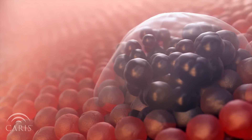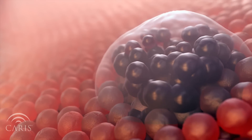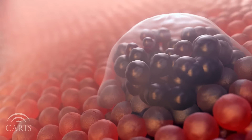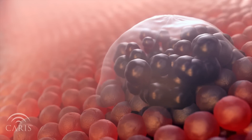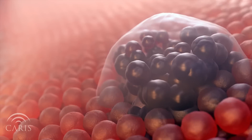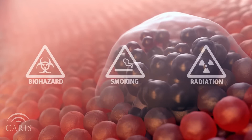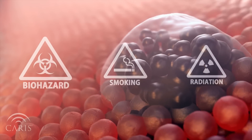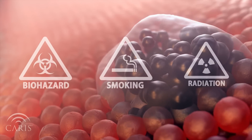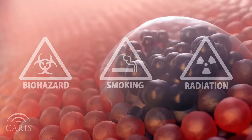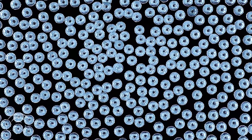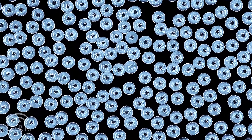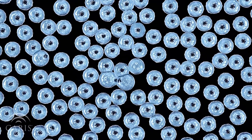Mutations are the underlying cause of cancer. The genetic code gets mixed up, lost, or changed. This can be caused by environmental factors, such as exposure to carcinogens like cigarette smoke or UV radiation. Mutations can also occur during normal cell division, caused by errors in the DNA.